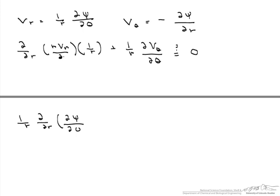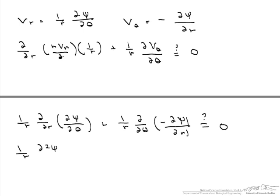So we have (1/r) * d/dr(d(psi)/dtheta) + (1/r) * d/dtheta(-d(psi)/dr) — does that equal zero? So we have (1/r) * d²(psi)/dr*dtheta minus (1/r) * d²(psi)/dtheta*dr, and that equals zero.